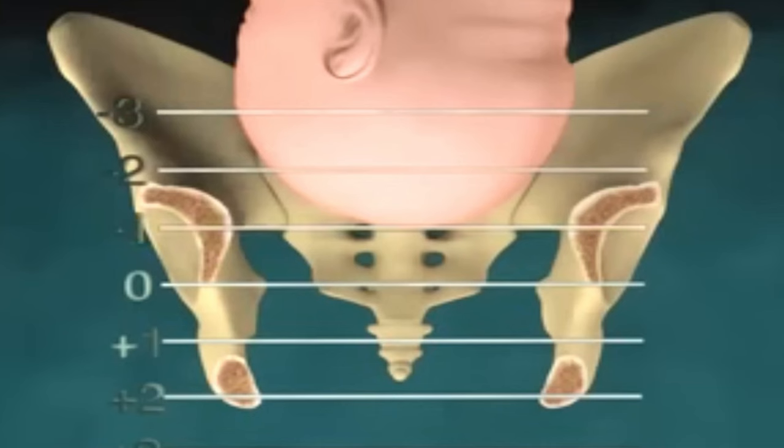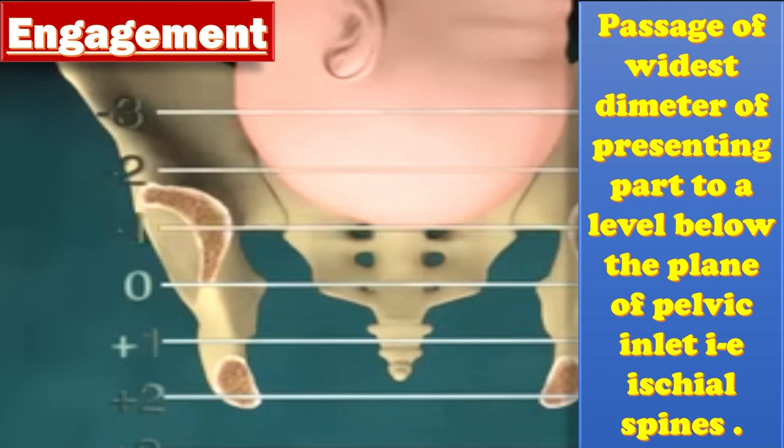Engagement is the passage of the widest diameter of the presenting part to a level below the plane of the pelvic inlet, meaning at the ischial spine level.